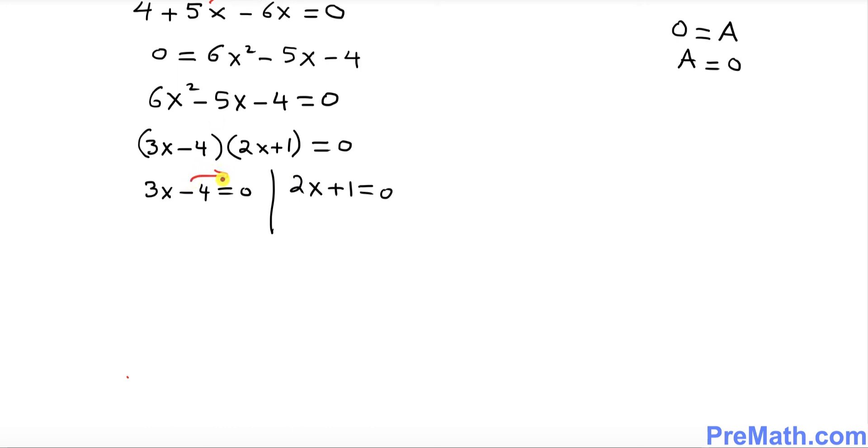I want you to move this negative 4 to the other side, so this becomes 3x equals 4. Divide both sides by 3, so x turns out to be 4 over 3 as one of the solutions.